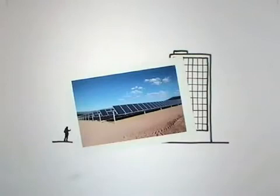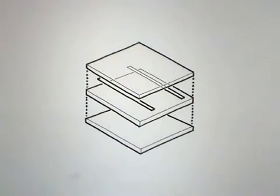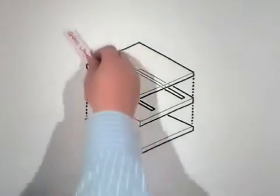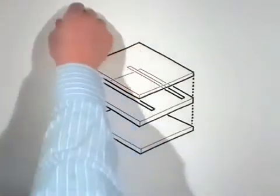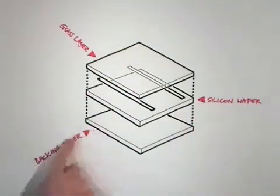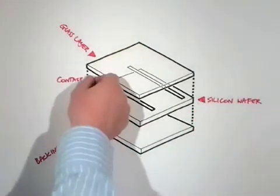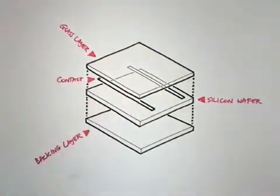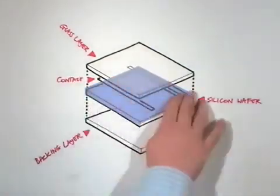But whether you have ten cells or a thousand, the principle is the same. Each cell is made of four main components: a top layer of glass, a silicon wafer, a backing layer, and conducting materials linking each side of the silicon wafer together in a circuit.